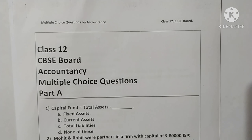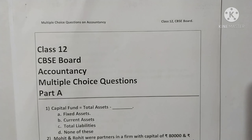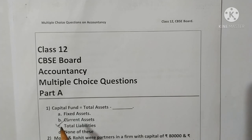Welcome to Class 12 CBSE Boards Accountancy. We are going to discuss the multiple choice questions part first. Question number one: capital employed is equal to total assets minus total liabilities. Here option C is the correct one.